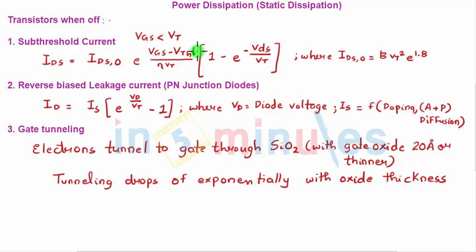These reverse bias diodes will also constitute to a reverse bias current, given by ID equal to the formula written. We have seen this in detail when we studied reverse bias leakage current through the PN junction diodes.